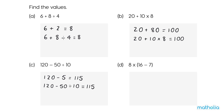D: 8 times open parentheses, 16 minus 7, close parentheses. Do the operation in the parentheses first. 16 minus 7 equals 9. 8 times 9 equals 72. So 8 times (16 minus 7) equals 72.